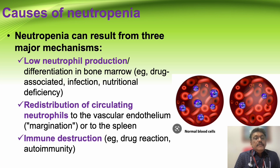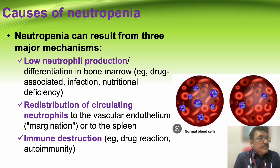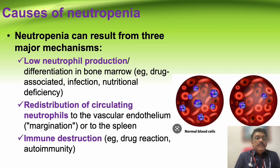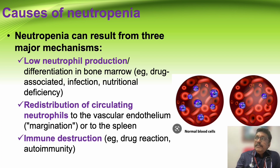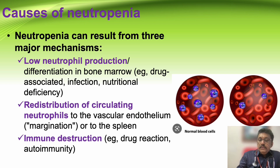The second mechanism is redistribution of circulating neutrophils to the vascular endothelium, called marginalization. Neutrophils can also be destroyed in circulation or in the spleen through immune destruction — either drug-induced or from autoimmune diseases — which destroys RBCs, WBCs, or platelets, causing a deficiency in neutrophil count.